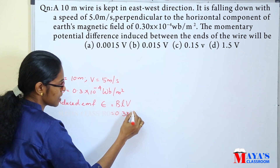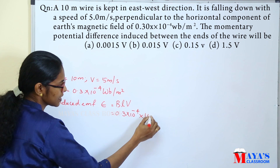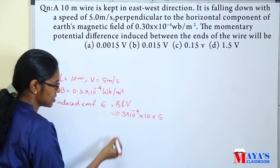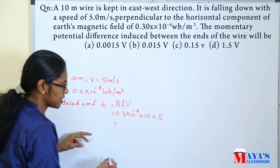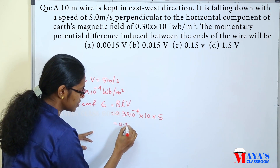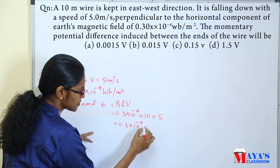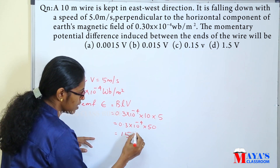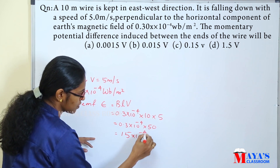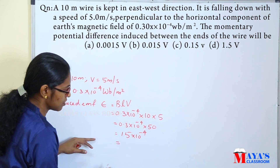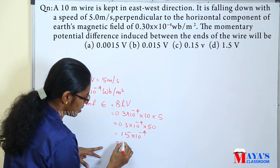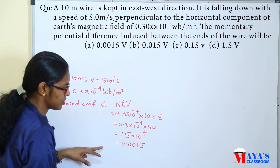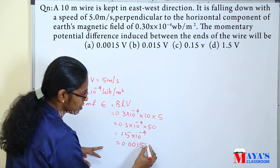We use the formula EMF = B × L × V, with B equal to 0.3 into 10 raise to minus 4, length 10 meter, and velocity 5 meter per second. Therefore, multiplying: 0.3 into 10 raise to minus 4 into 10 into 5, that is equal to 15 into 10 raise to minus 4, which is also equal to 0.0015 volt.